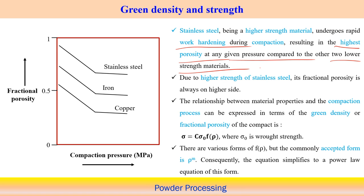The fractional porosity is much higher in the case of stainless steel because rapid work hardening may not be accommodated to densify and fill the space. Lower-strength materials with lower work hardening effect retain less porosity after compaction. Due to higher strength of stainless steel, its fractional porosity is always on the higher side, while for low-strength materials the porosity is on the lower side.